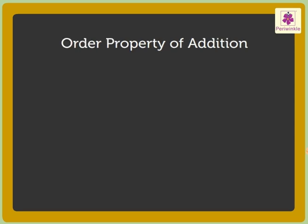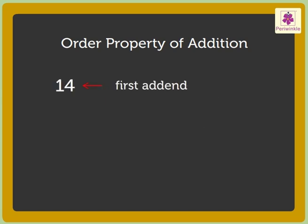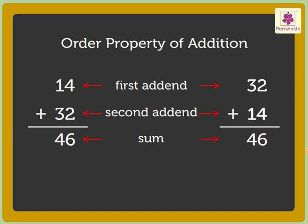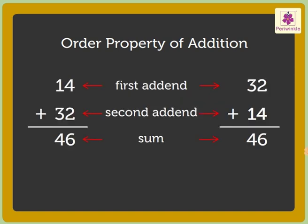Order property of addition: Let us take the numbers 14 and 32. When we add 14 and 32, we get the sum 46. Now, let us change the order of addends. Let us add 32 and 14. Again, we get the sum 46. Hence, 14 plus 32 is equal to 32 plus 14. Thus, we know that changing the order of the addends does not change the sum.